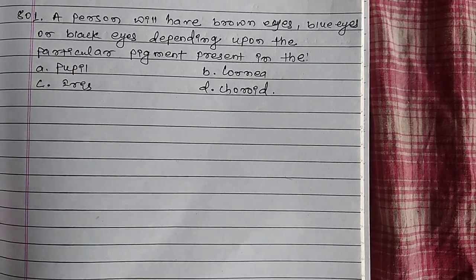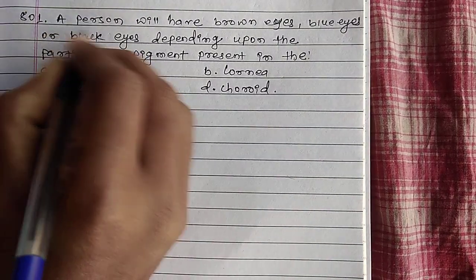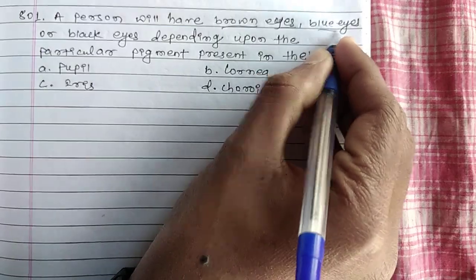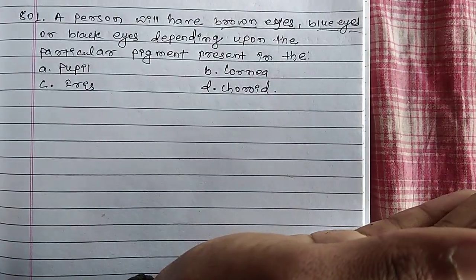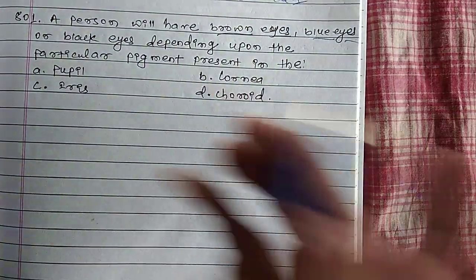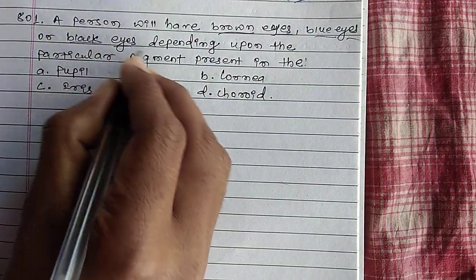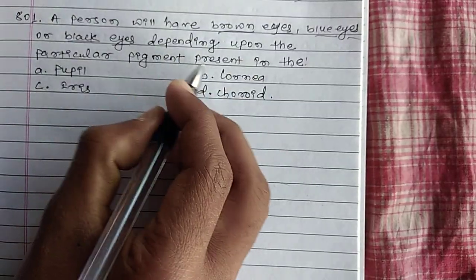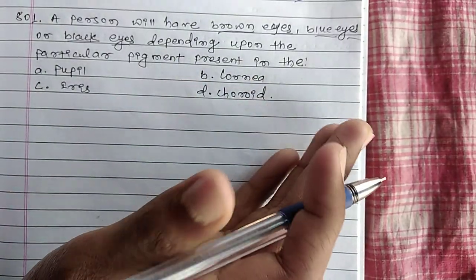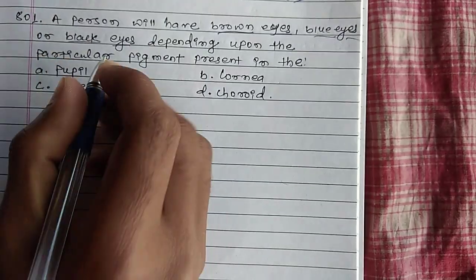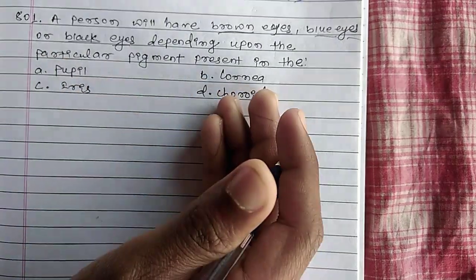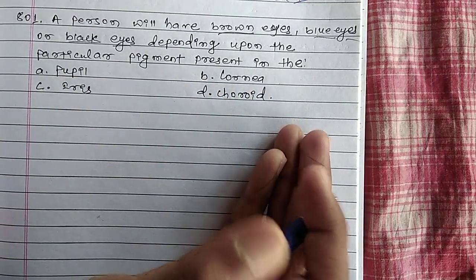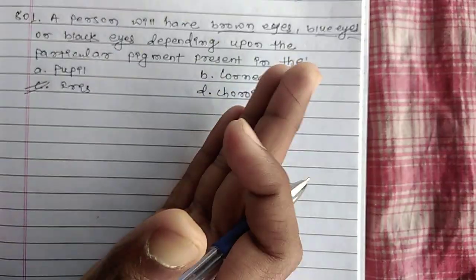A person will have brown eyes, blue eyes, or black eyes depending upon the particular pigment present in the body. The question asks: which part — pupil, cornea, iris, or choroid — determines eye color? Option C, iris, is the correct answer.